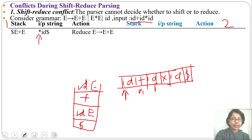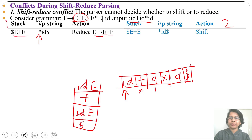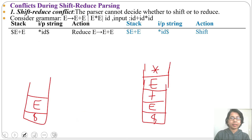Now just check: is this a handle? Yes, E plus E is present at the RHS, so this is a handle. Parser 1 can reduce E plus E to E. Now what will parser 2 do? Parser 2 does not want to reduce; it wants to shift the multiplication symbol onto the stack. Now the parser is confused between shift and reduce — whether to reduce E plus E or to shift multiplication onto the stack.